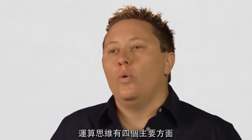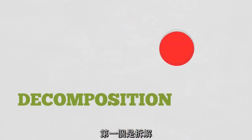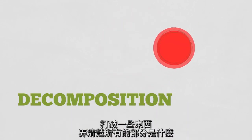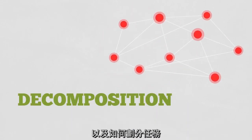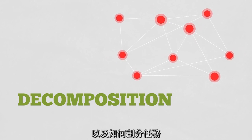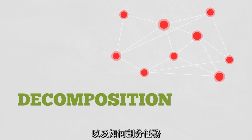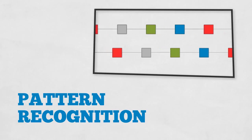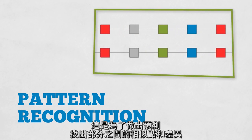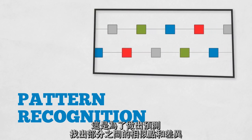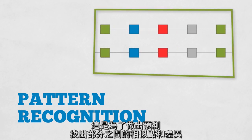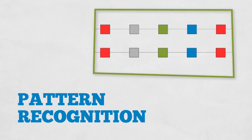There are four major facets of computational thinking. One is decomposition — breaking something down and figuring out what all the parts are and how you might divide up a task. And then there's pattern recognition, which is finding similarities and differences between these parts in order to make predictions.